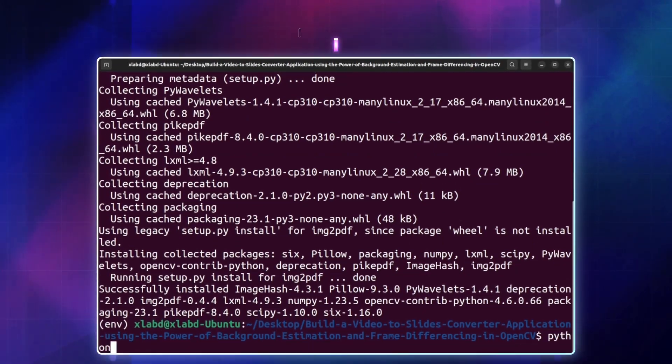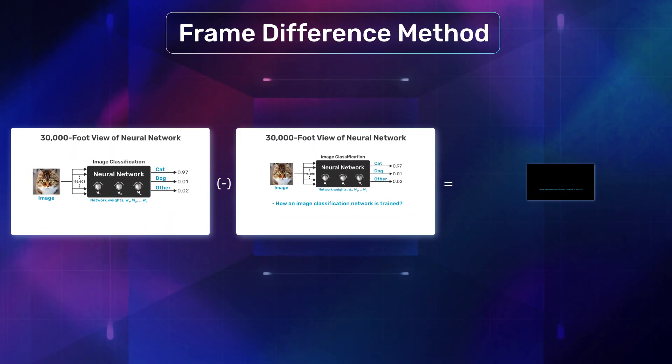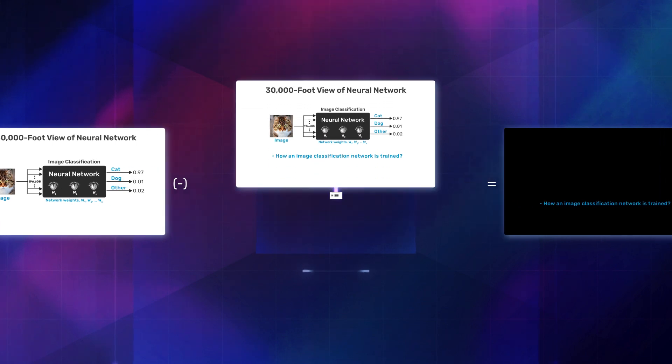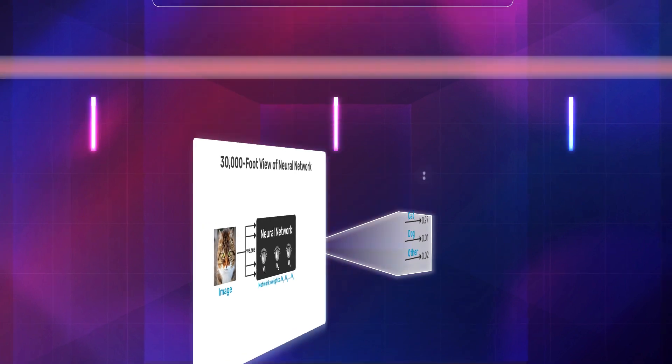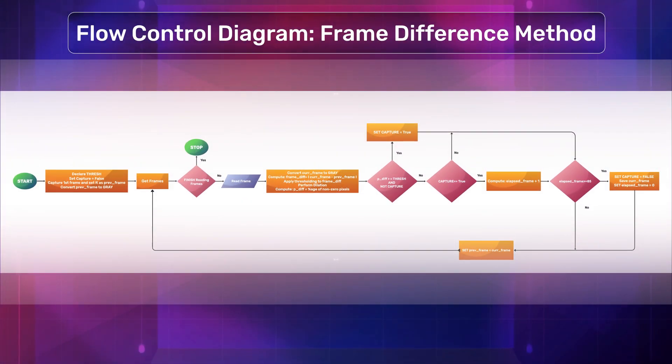Let's get started. Frame differencing calculates the difference between two consecutive frames, whereas background subtraction separates the foreground objects from the background. Let's check out the flow control diagram of both these methods.